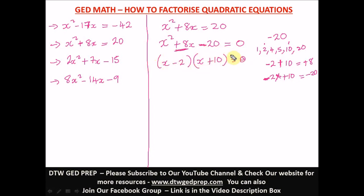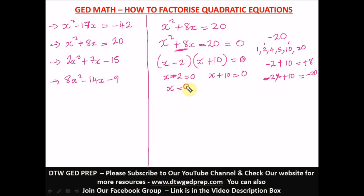So we put negative 2 and positive 10 into our two brackets: x minus 2 and x plus 10. If asked to solve for x: x minus 2 equals 0 gives x equals positive 2; x plus 10 equals 0 gives x equals negative 10. So the solutions for x are 2 and negative 10.